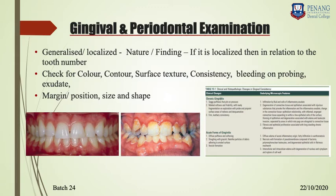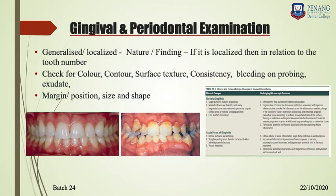Bleeding on probing is an important clinical finding for gingival and periodontal examination. It will tell you whether disease is present or not — it is a positive indicator for disease. However, mere absence of bleeding does not tell you there is no disease. Disease may be present even without bleeding, but whenever bleeding is present, disease is definitely present. That is why bleeding on probing is called the first clinical sign of gingival disease.